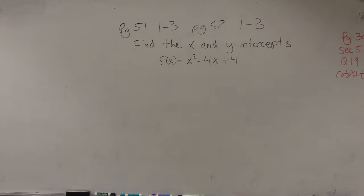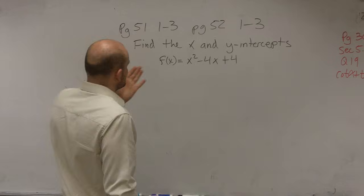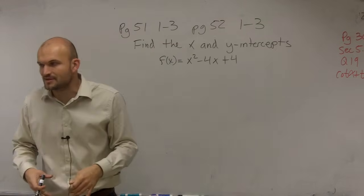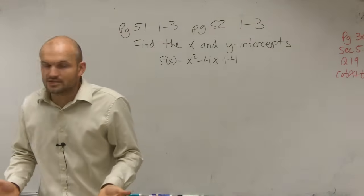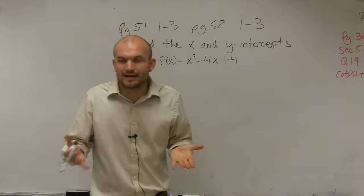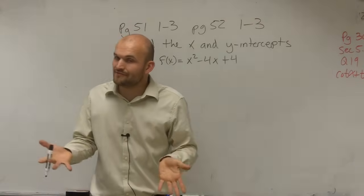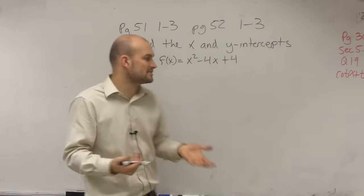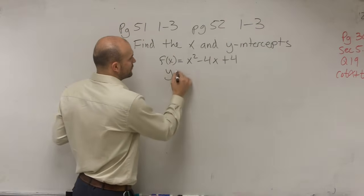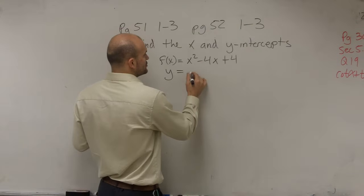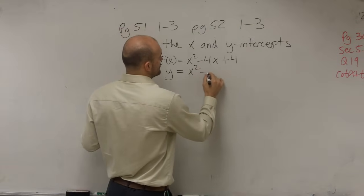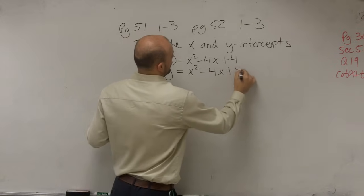All right, so I'll go and explain this as well. When I say find the x and y intercepts, right now we're dealing with a function. So when dealing with a function, we have an input and an output of an x and an f(x). But when talking about x and y intercepts, it is helpful if we just rewrite our function using an equation y = x² - 4x + 4.